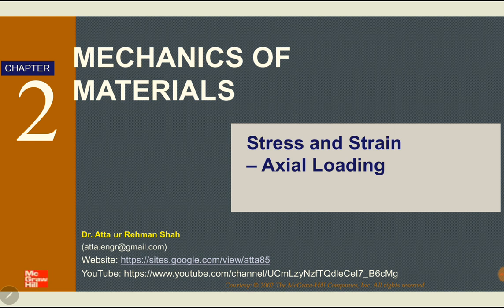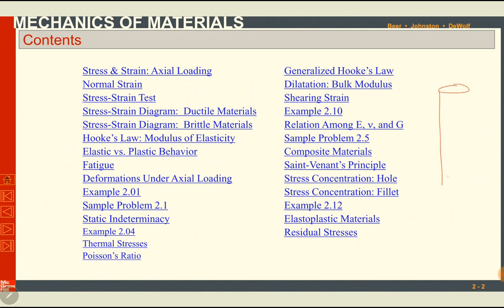We have already discussed what axial loading is in Chapter 1. An axial load is a centric load which passes through the centroid of an axial member. An axial member is a prismatic member — it can be a cylinder, a square bar, or a rectangular bar. There is a centric axis passing through the centroid. If the load is applied along the centric axis, it is called an axial load. The member can be round, cylindrical, square, or any other shape.